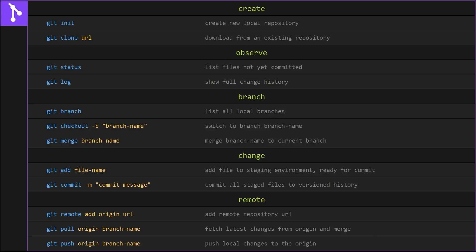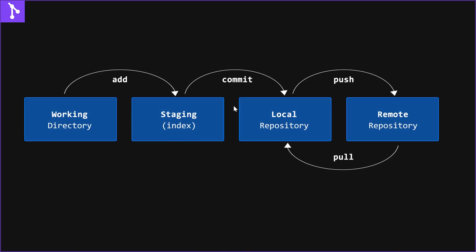Hey guys, what's going on? It's CleverTeky and in this video I'm going to give you an introduction to Git and GitHub. Git is a program that tracks changes made to files as you're working on a project, building history over time so that you can keep track of all the different versions and changes that you're making to files. GitHub allows you to work on the same project efficiently with other people by keeping track of all the changes each person is making.